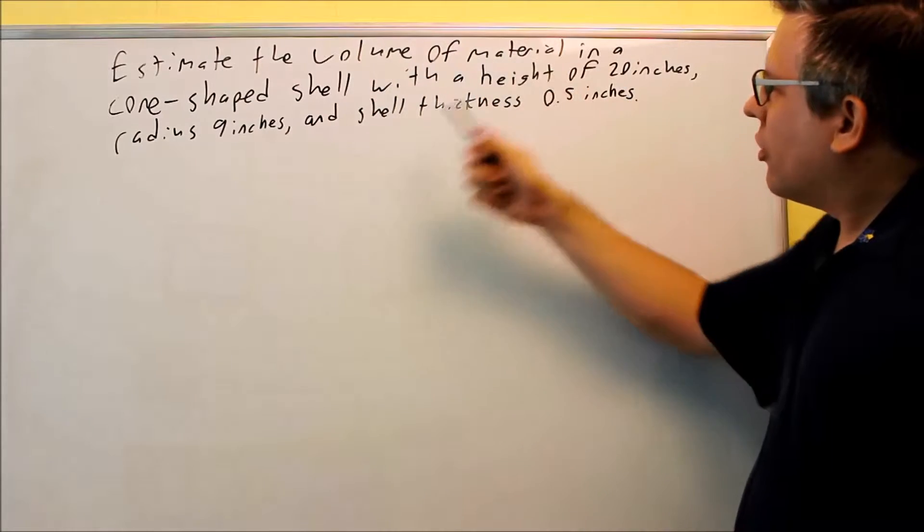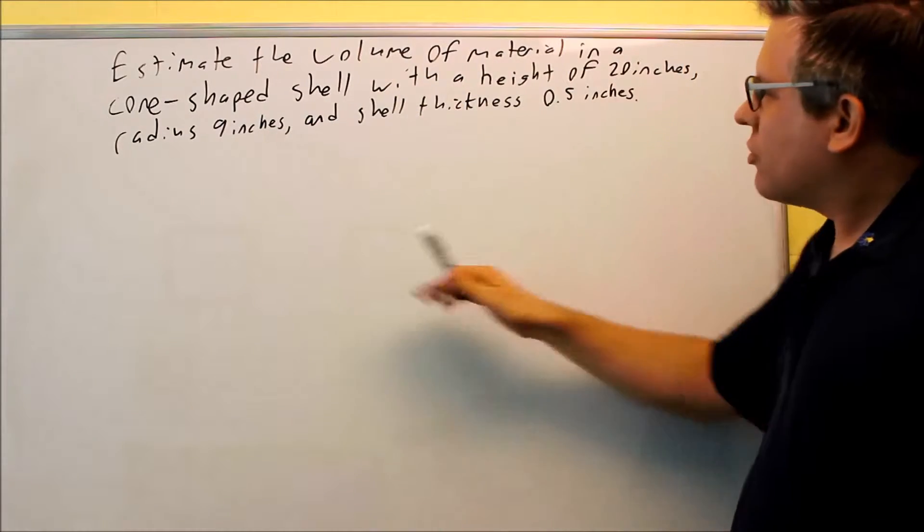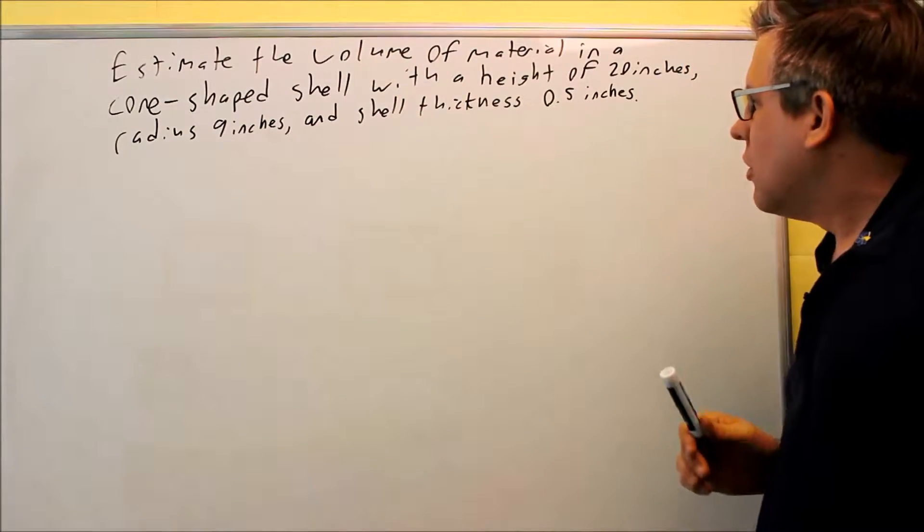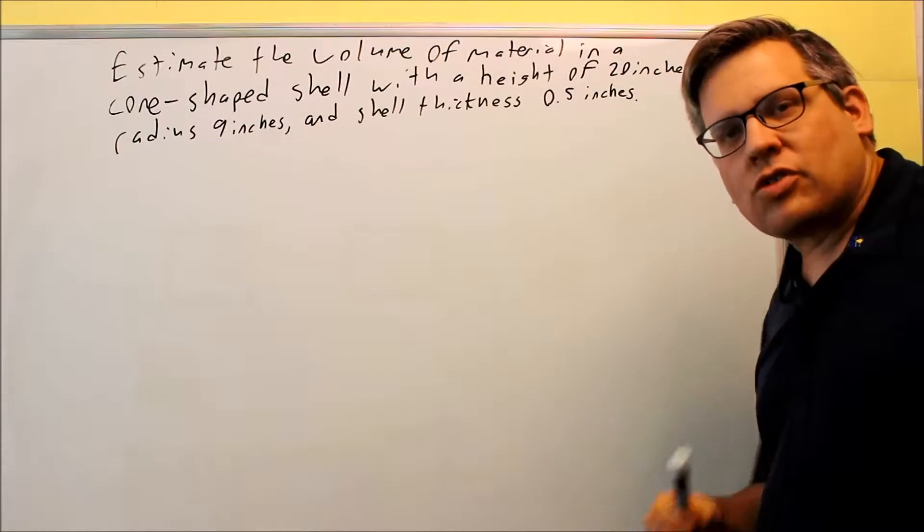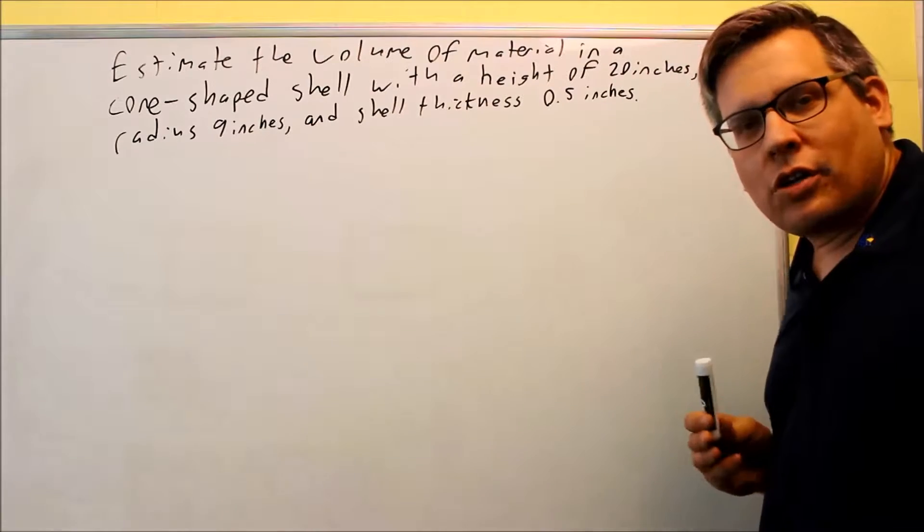Estimate the volume of material in a cone-shaped shell with a height of 20 inches, radius 9, and shell thickness 0.5 inches. So first we need some kind of a formula because we've got to take the derivative and we'll plug in the information later.